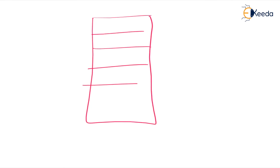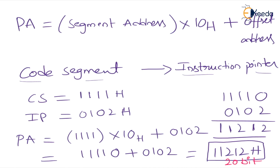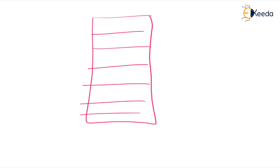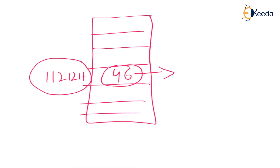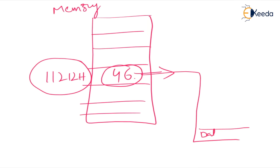By using this physical address, we can access the address location. Suppose at address 11212H, the data is 46. To access this data we must first calculate the physical address. After calculating the physical address, the data is transferred through the data bus.